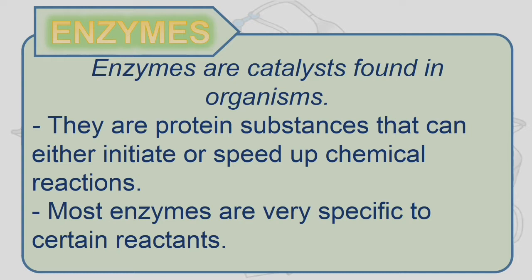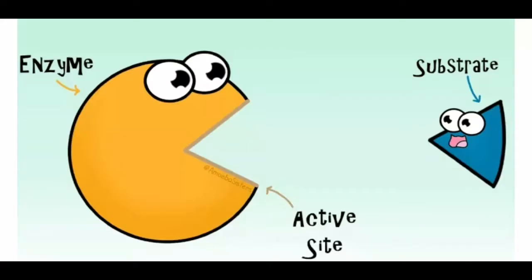Enzymes are catalysts found in organisms. They are protein substances that can either initiate or speed up chemical reactions. Most enzymes are very specific to certain reactants. The part of the enzyme where the substrate binds is called the active site, while the substrate is the substance on which the chemical reaction takes place.